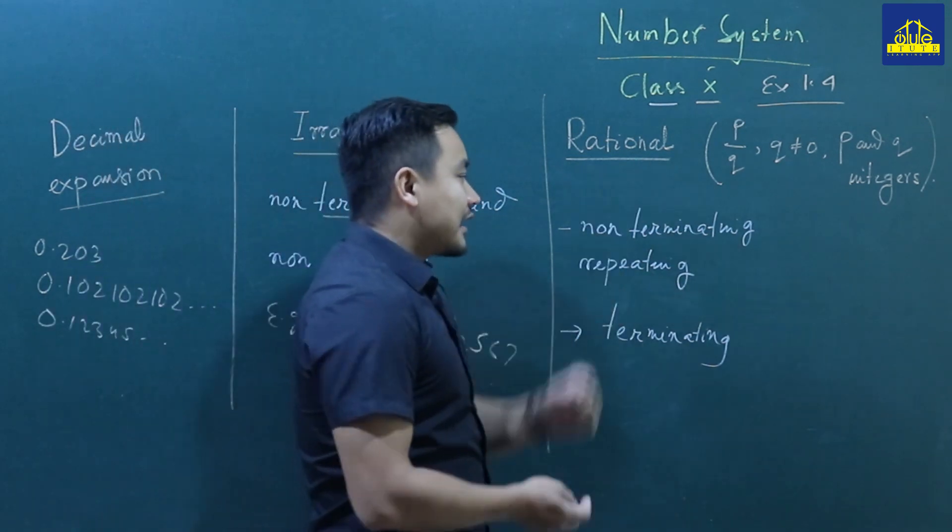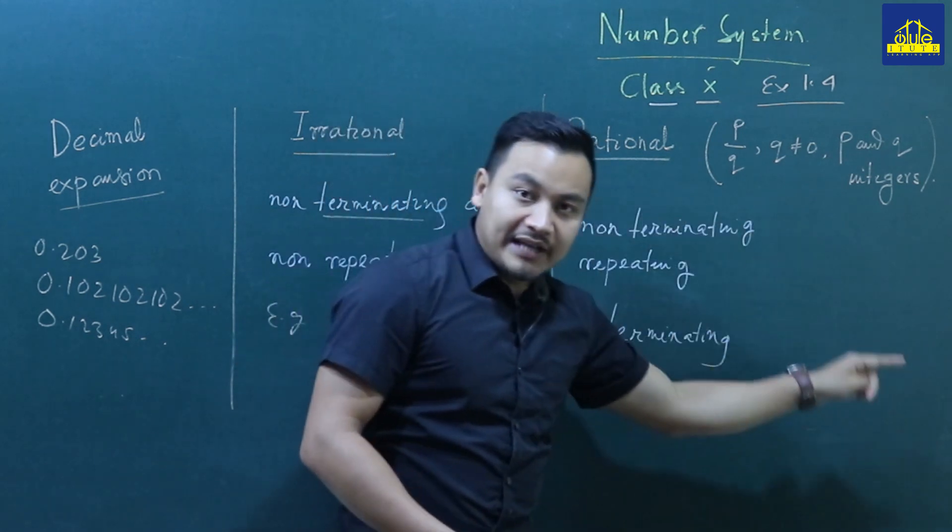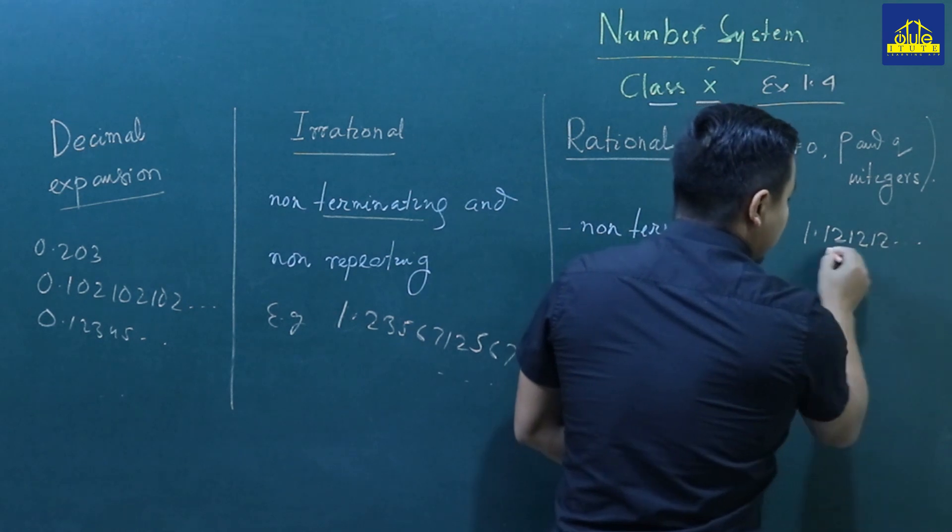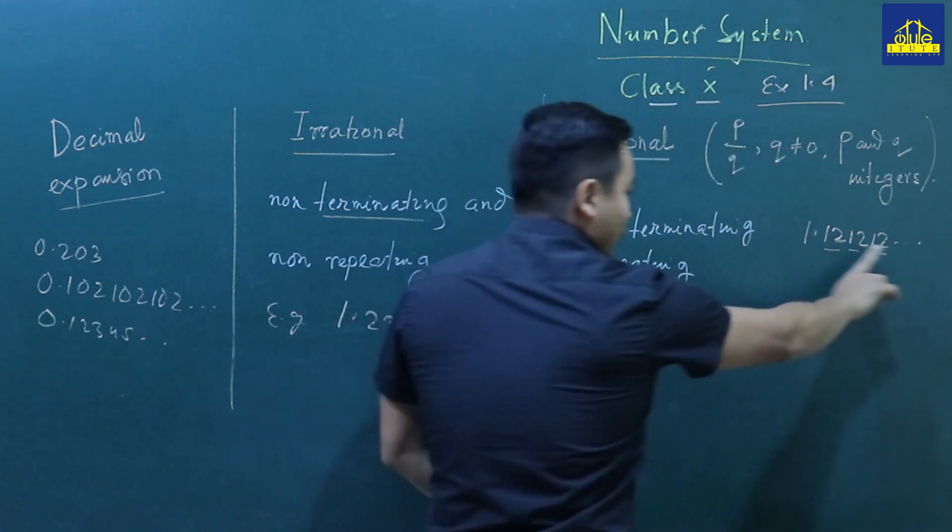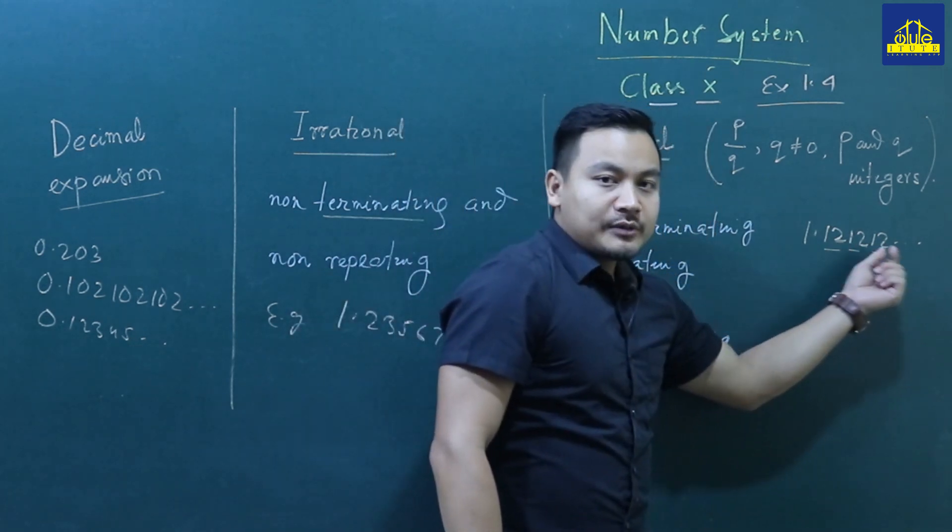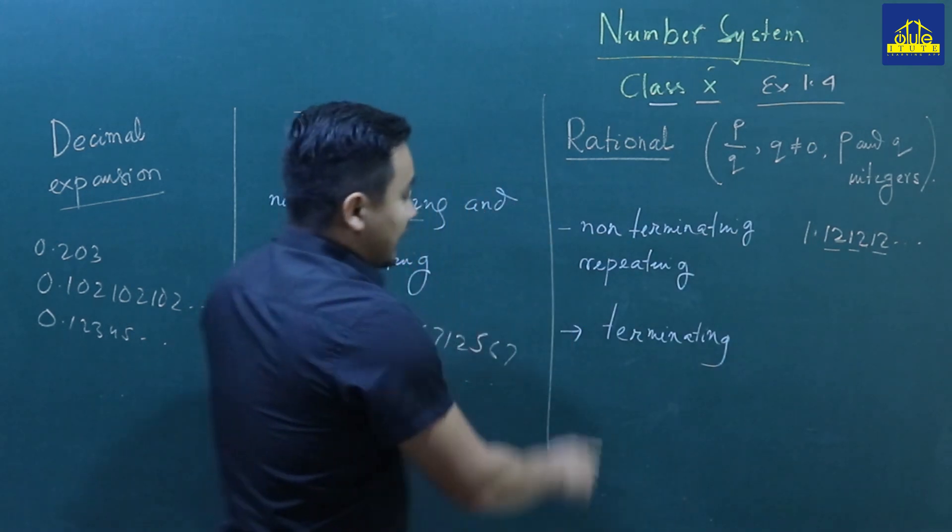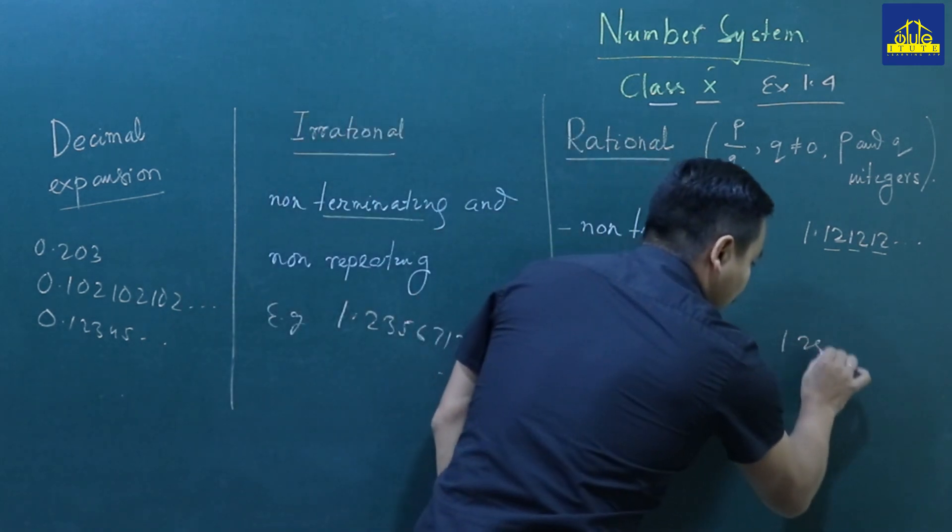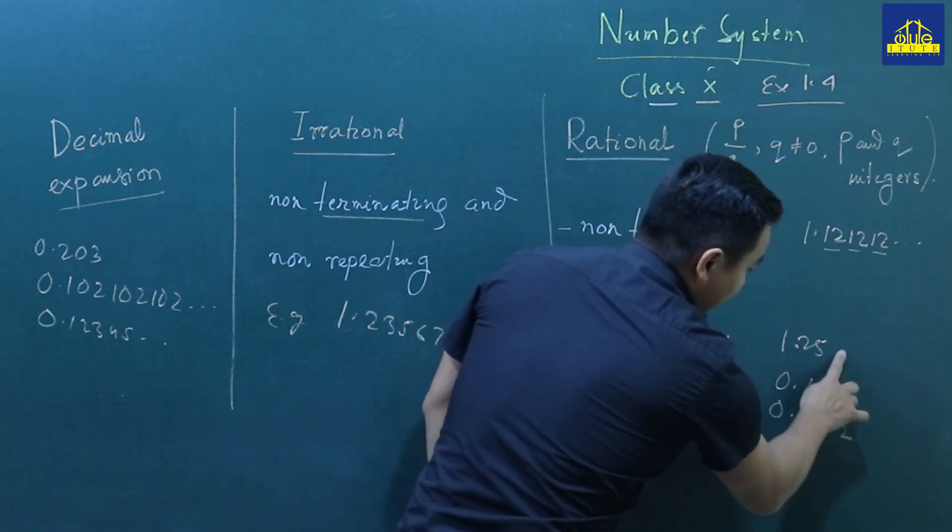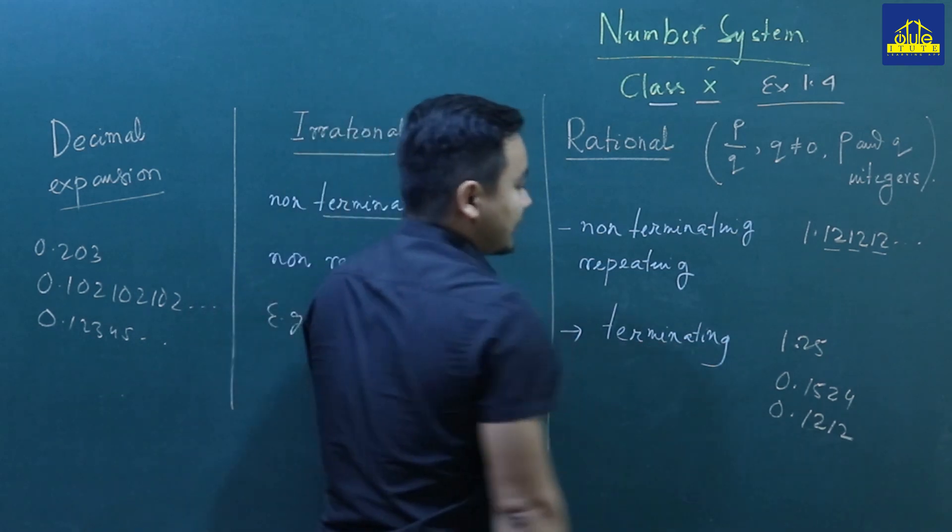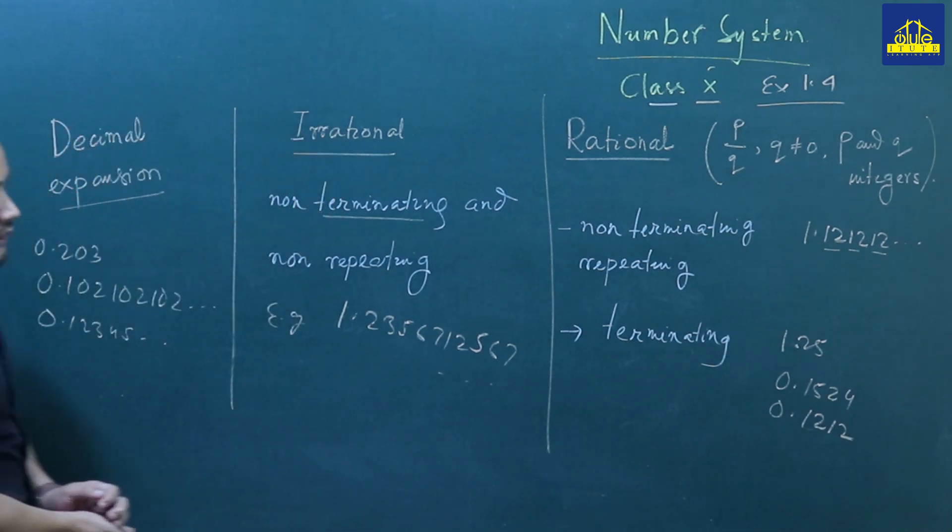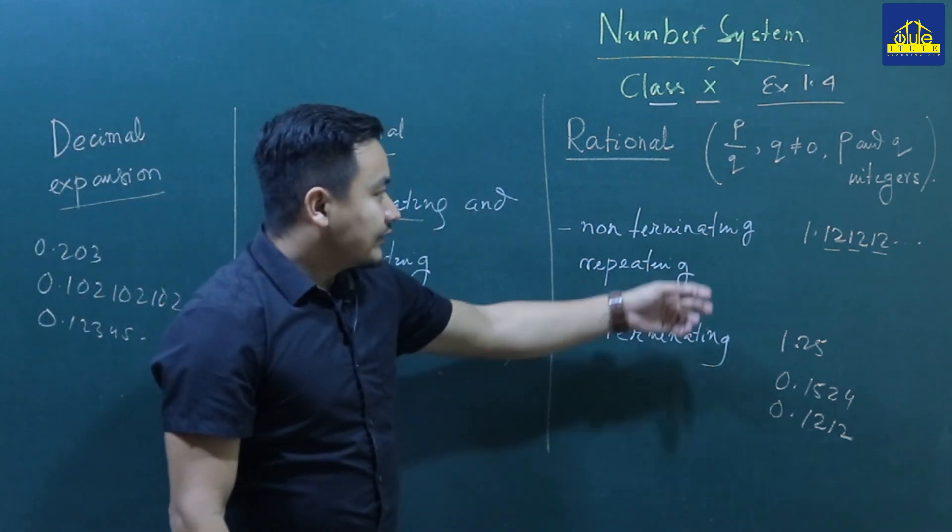Whether a decimal is non-terminating and repeating, or terminating - suppose 1.25, 0.1524, 0.1212 - if it terminates, it is a terminating decimal. Terminating decimals are rational numbers.